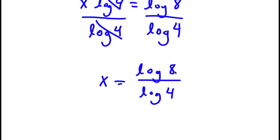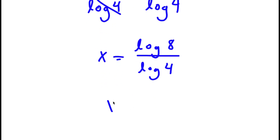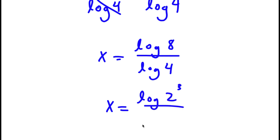Now, remember 8, that's equal to 2 to the power of 3, and 4 is equal to 2 to the power of 2. So now I have log 2 to the power of 3 over log 2 to the power of 2.